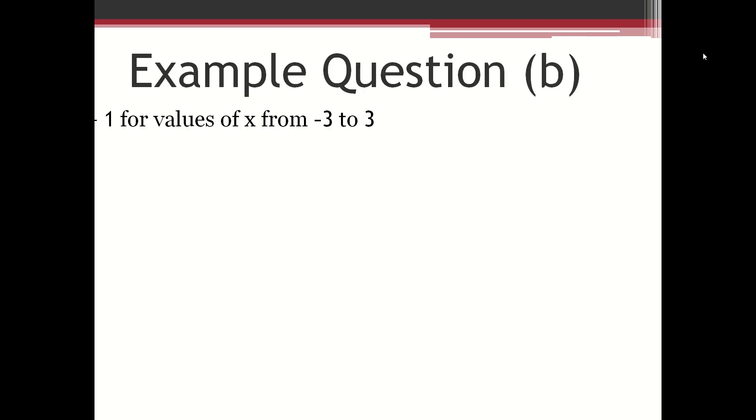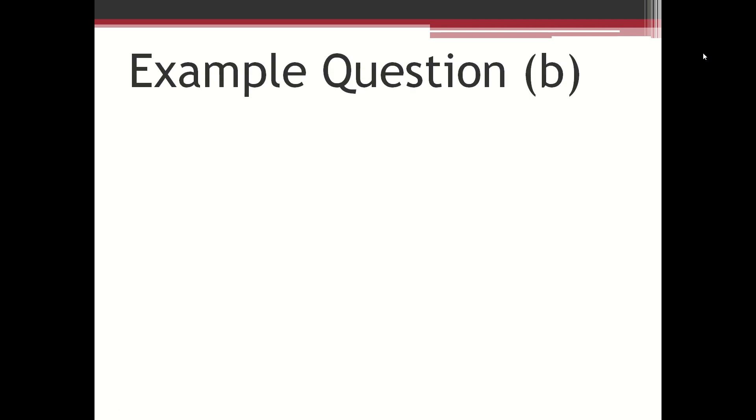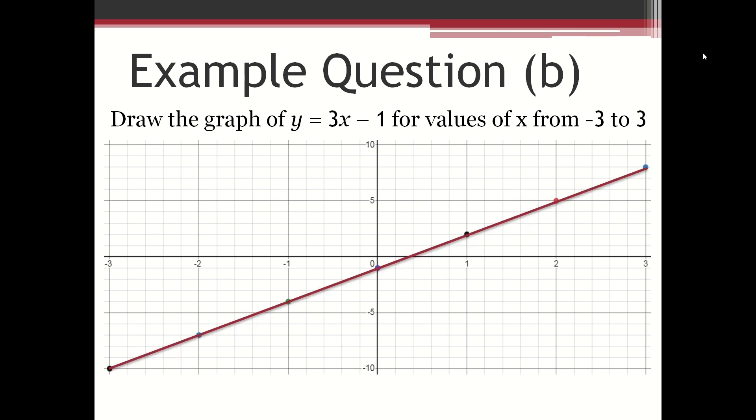And the second half is to draw the graph of y equals 3x minus 1 for the values of x from minus 3 to 3. So here's your graph and you draw on the points onto the graph then you join the points with a straight line.